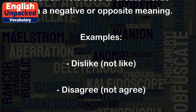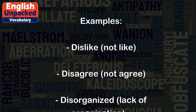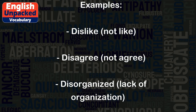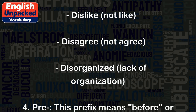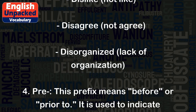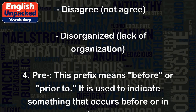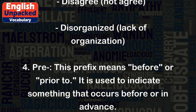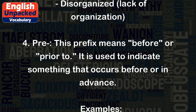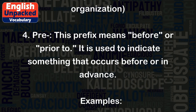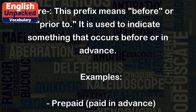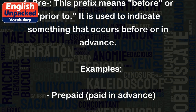Examples: Dislike — not like. Disagree — not agree. Disorganized — lack of organization. 4. Pre. This prefix means before, or prior to. It is used to indicate something that occurs before or in advance.